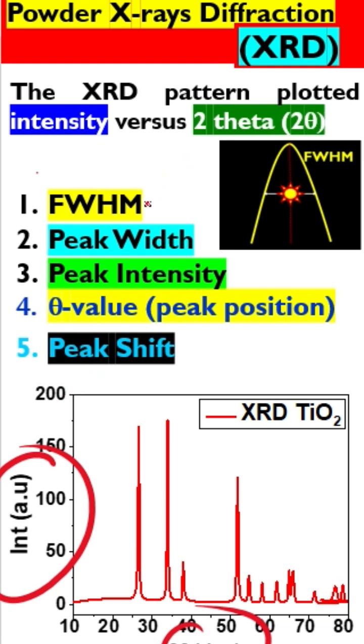The first is basically full width at half maxima. You can see here — this is basically the full width at half maxima.